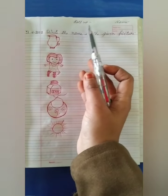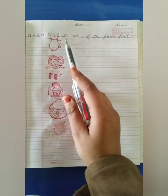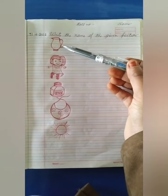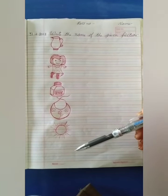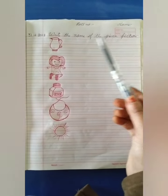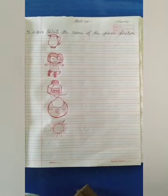Write here date, your roll number and name. Let's start class. Write the name of the given picture. You can see here given some pictures. You have to write their name in front of the picture. So, let's start.